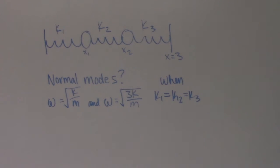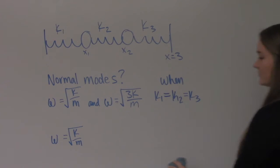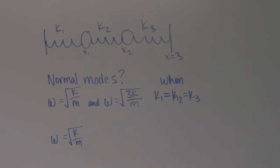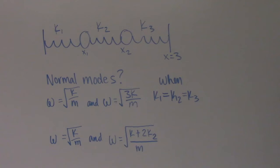There is another set of normal modes when we change the spring constant in the middle. These are at angular frequencies square root of k over m just the same as before, but our second angular frequency is square root of k plus 2k2 over m. Again, this is when k2 is different than k1 and k3.